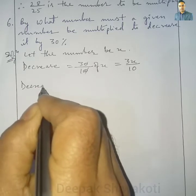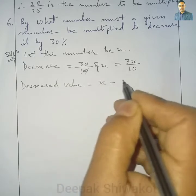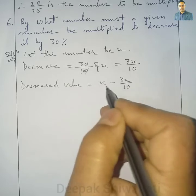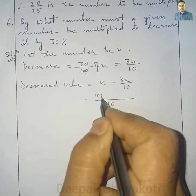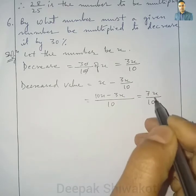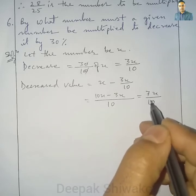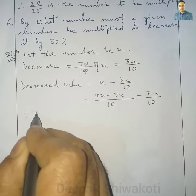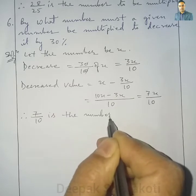The decreased value equals x minus 3x by 10. Taking 10 as the LCM, we get 10x minus 3x, which equals 7x by 10. So if we multiply x by 7 by 10, then x will decrease by 30%. Therefore, 7 by 10 is the number to be multiplied.